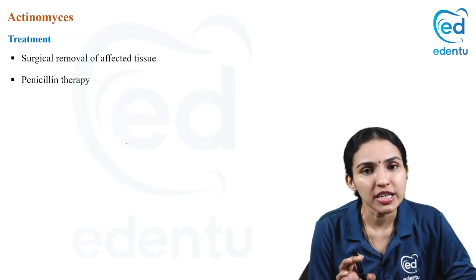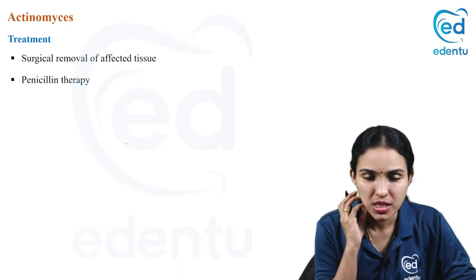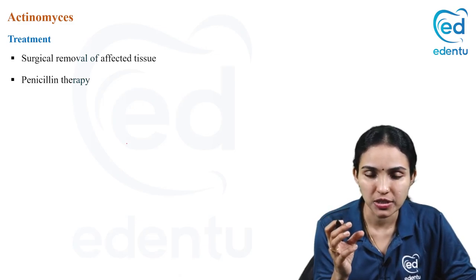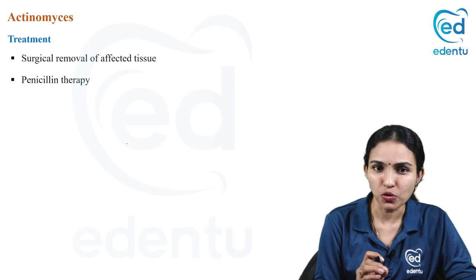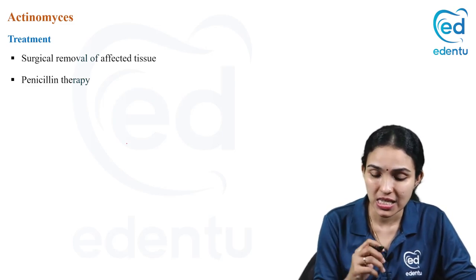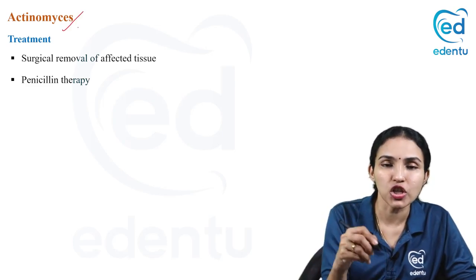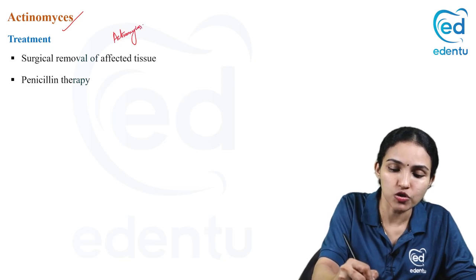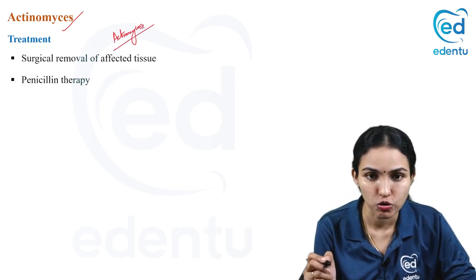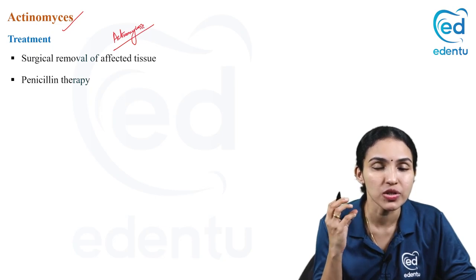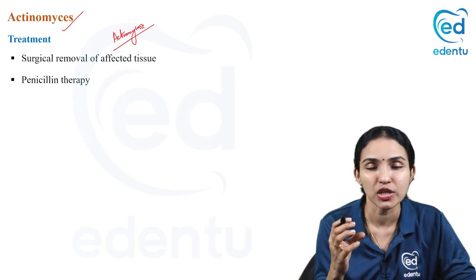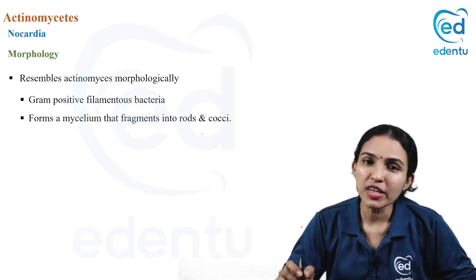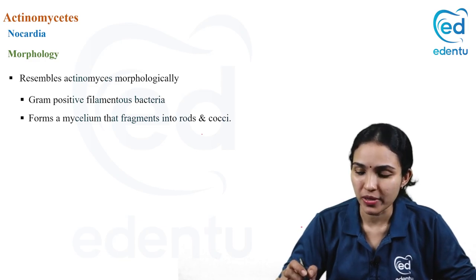For treatment of actinomycosis, surgical removal of the affected part is recommended along with penicillin therapy, which is effective. To summarize: actinomyces causes actinomycosis, the most common form is cervicofacial actinomycosis with abscesses, draining sinuses, draining yellowish-white sulfur granules, and actinomyces is non-acid-fast.